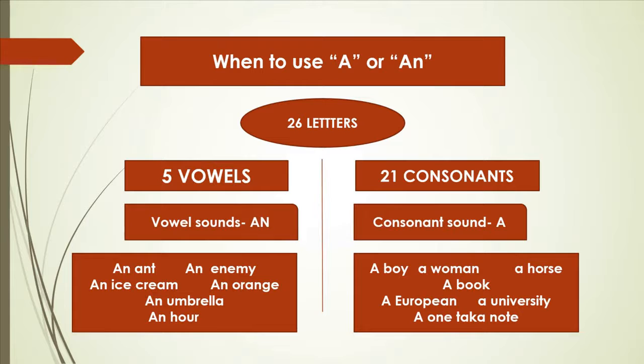See, European. You can say ma'am, there's E here at the beginning, so E is a vowel, so why we are not using an here? Because E sounds like consonant here, you European sounds like Y-O-U. That's why we are not using an before that. University, U sounds like you, not uh. That's why you're using a here. And lastly, a one to come. O is pronouncing like w, that's why we are using a before that.